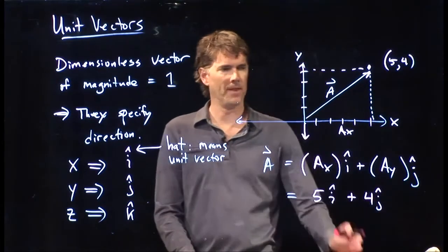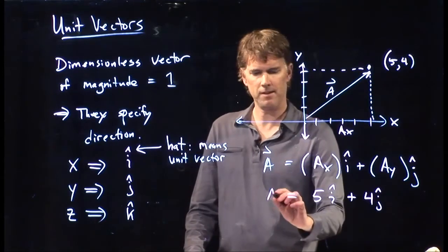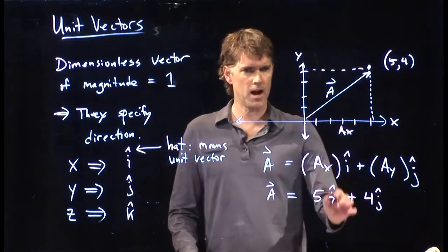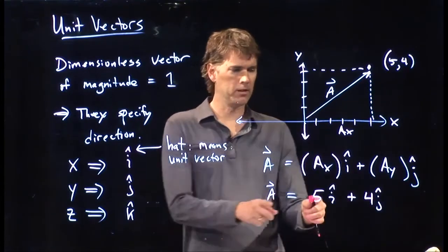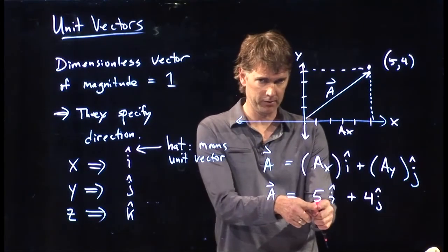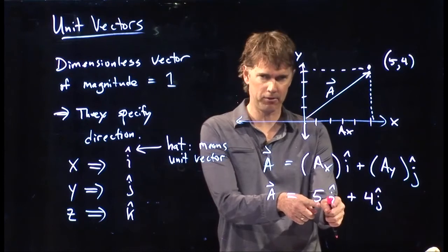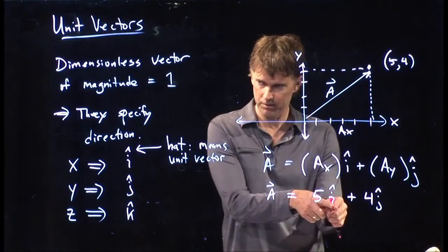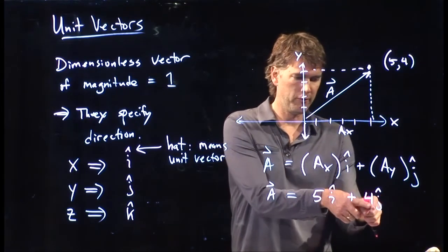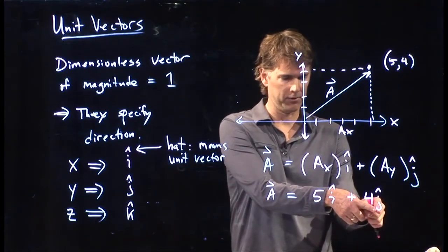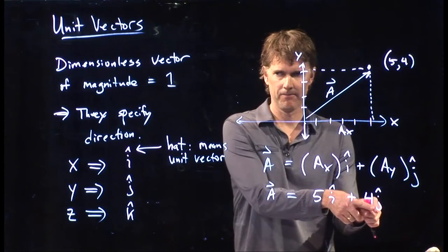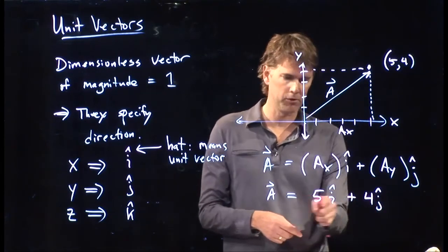Okay? That's what this vector is. That's how you write it. Five i-hat plus four j-hat. And what it means is, let's move five units in the x-direction. That's what the i-hat means. And let's move four units in the y-axis direction, which is the j-hat.